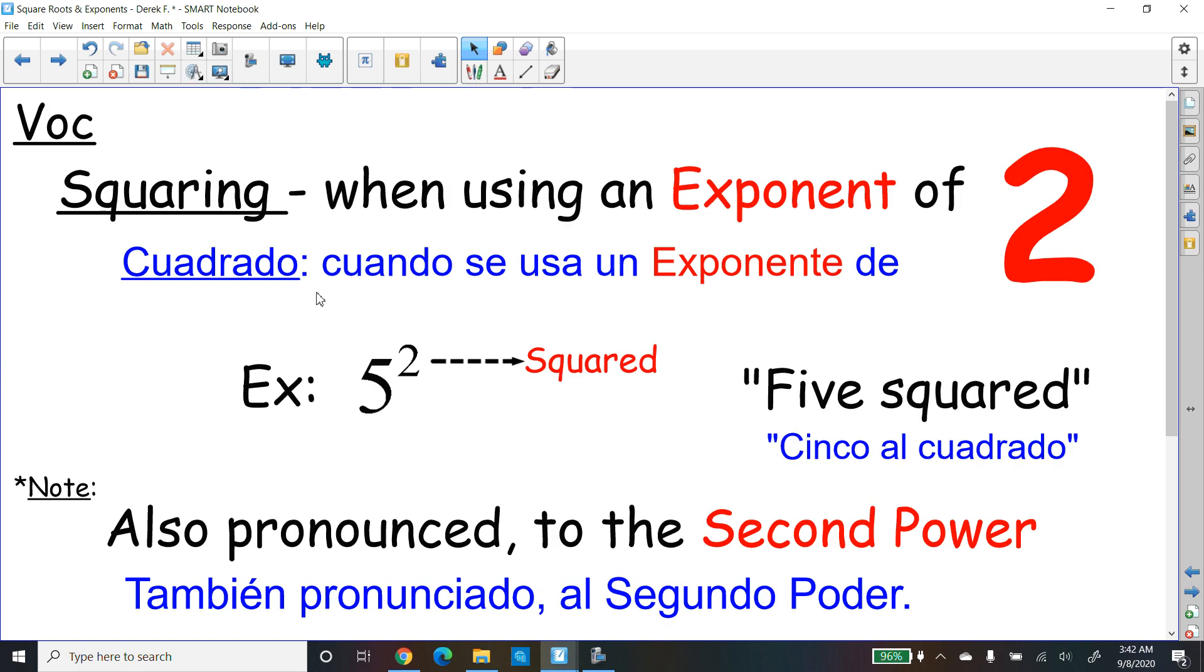When we are using that 2, that's called squaring as the exponent. So when the exponent is 2, it's called squared or squaring. Like example 5 to the little number 2, that's squared. We call it 5 squared. Also pronounced to the second power, we could say 5 to the second power. So that's just another way of saying it. So if you hear people say 5 to the second power or 5 squared, they're talking about an exponent of 2.